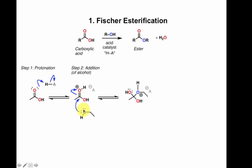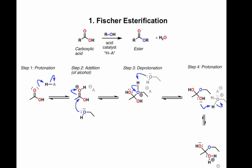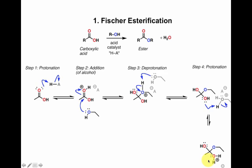A molecule of ethanol attacks this more electrophilic carbonyl carbon. This mechanistic step is called addition — we're forming a new carbon-oxygen bond and breaking the carbon-oxygen pi bond, and this is the product we obtain. Now we have a protonated oxygen with a positive charge on oxygen, which can be deprotonated by solvent — in our case ethanol, present in large excess. Then one of these oxygens can be protonated by our acid, giving us OH2 with a positive charge. This is a really great leaving group — water is a weak base, which is the definition of a great leaving group.